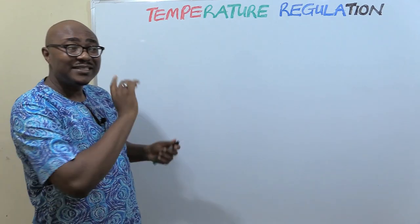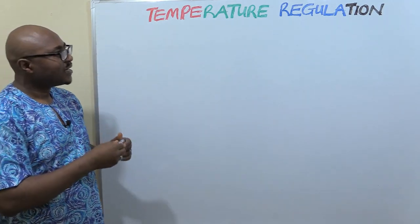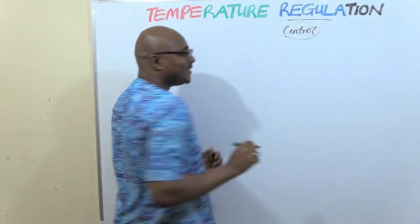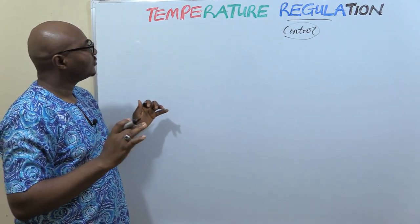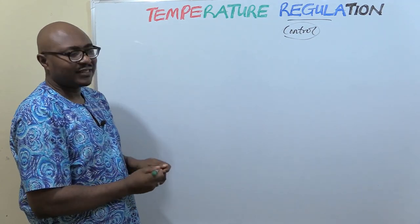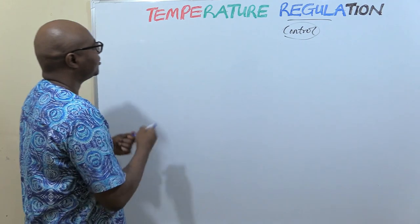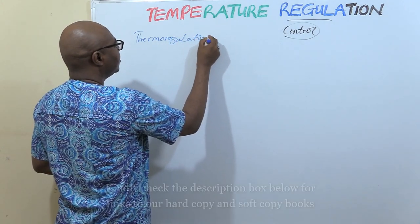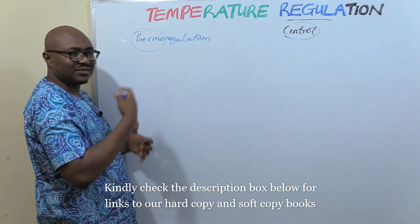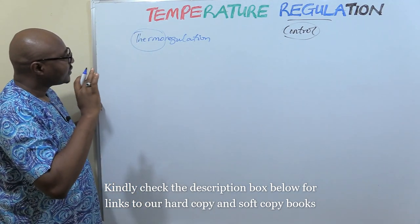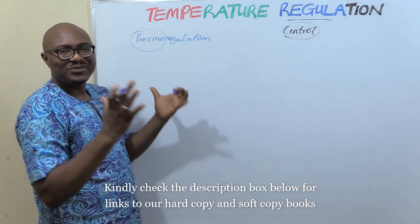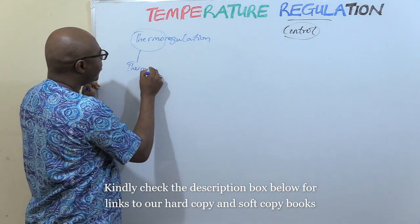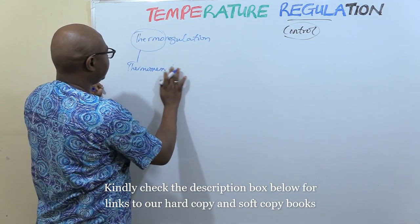Today we're going to be dealing with temperature regulation. Whenever you hear 'regulation' in physiology, they're talking about control — you can use them interchangeably. You can say temperature control. Sometimes you can call it thermoregulation. 'Thermo' has to do with measurement of heat and cold. What do we use to measure temperature? Everybody knows that — a thermometer.